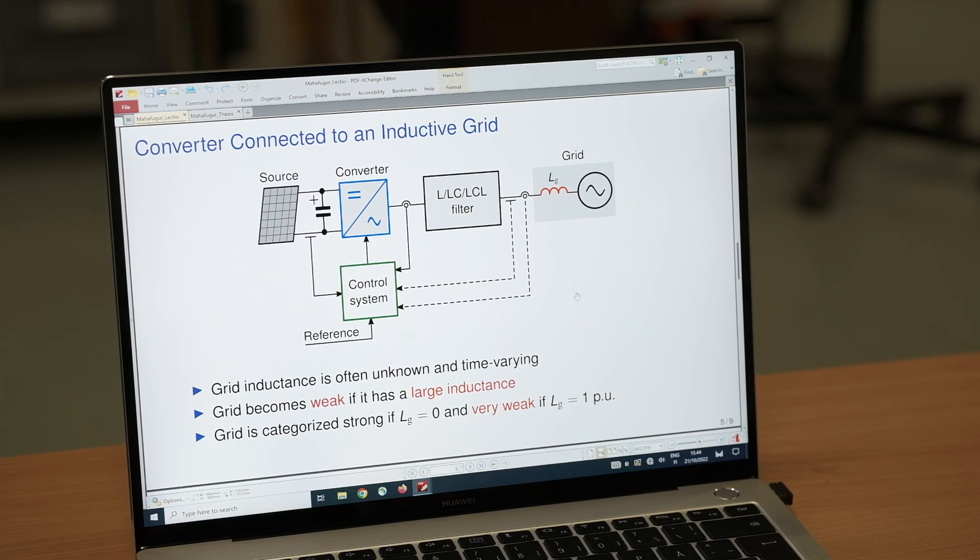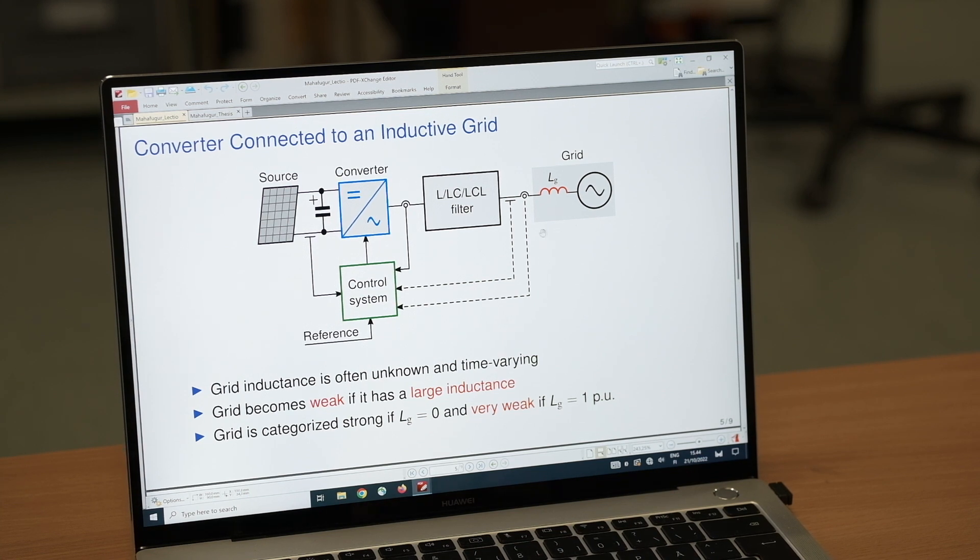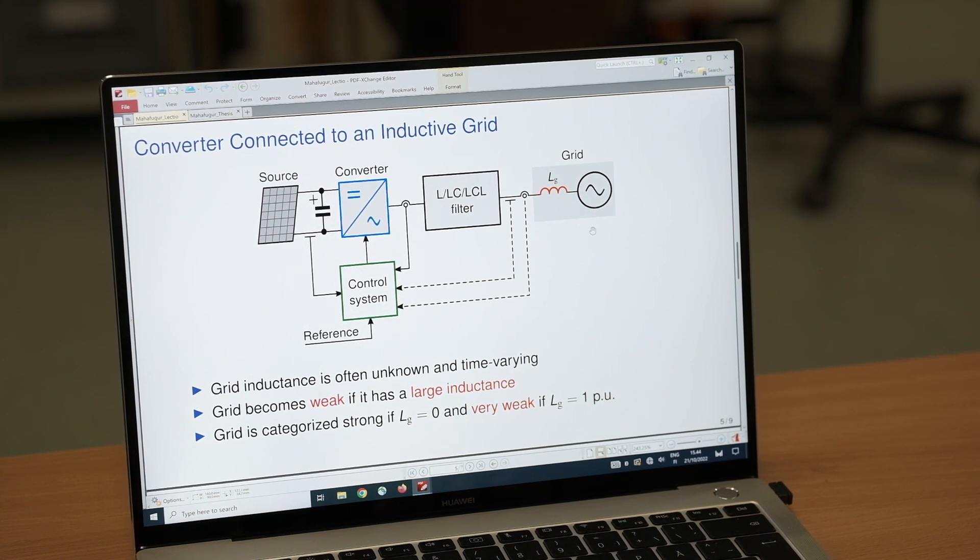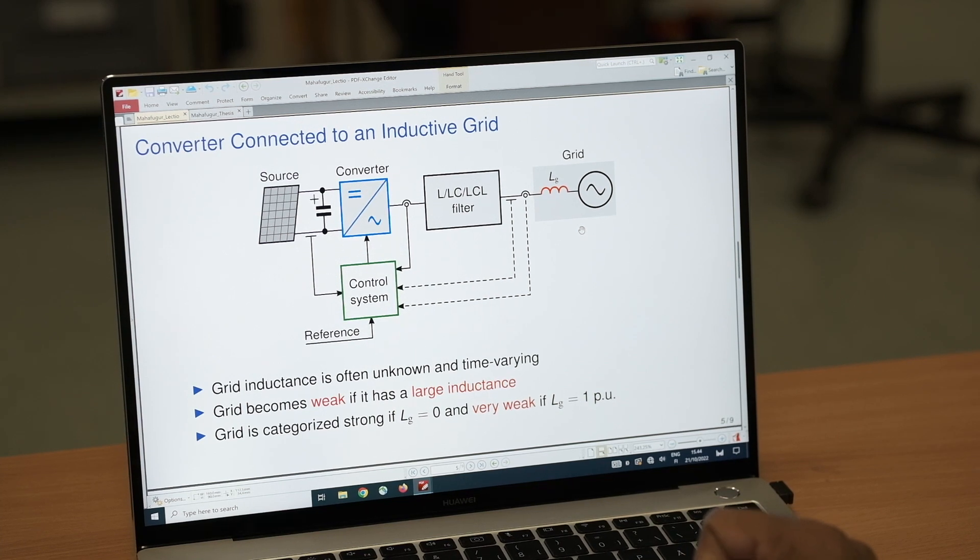For example, if the power plants are located in remote areas, long transmission lines are required to connect those power plants into the grid. For such cases, the grid becomes even more difficult to control under weak grid conditions due to high grid impedance.